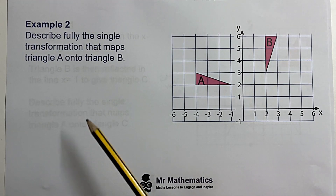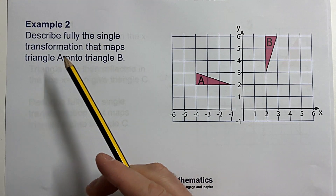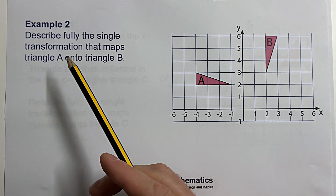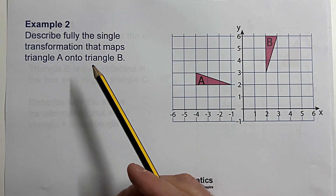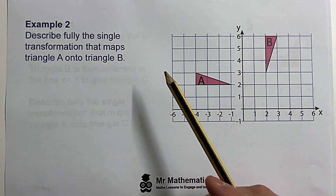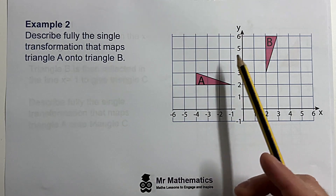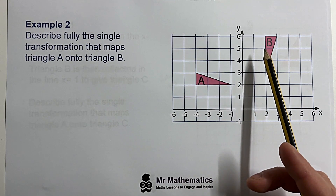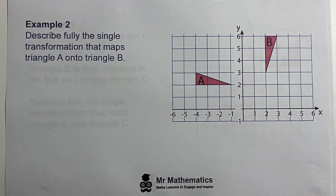Let's try example two. We've been asked to describe fully the single transformation that maps triangle A onto triangle B — to go from this triangle to this triangle. Perhaps you want to try this question yourself — you can pause the video, and when you come back we'll go through the solution.